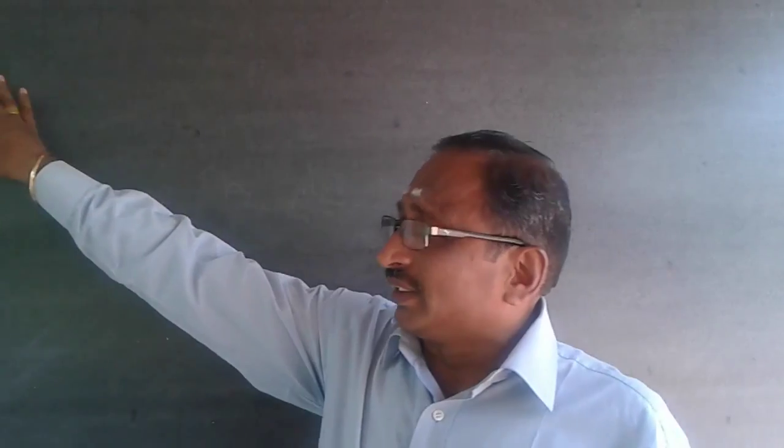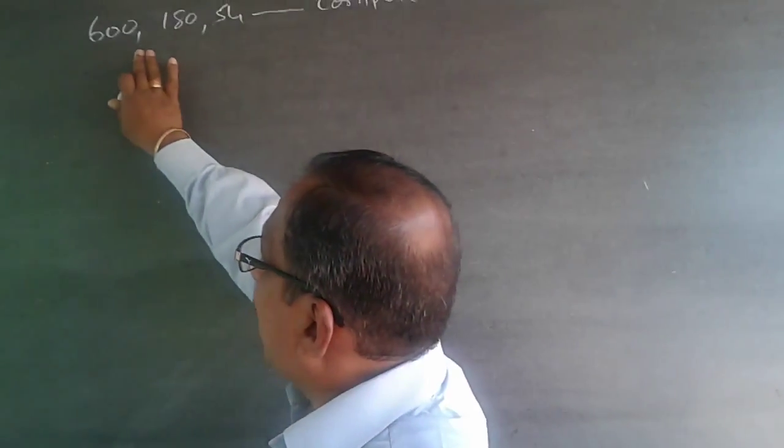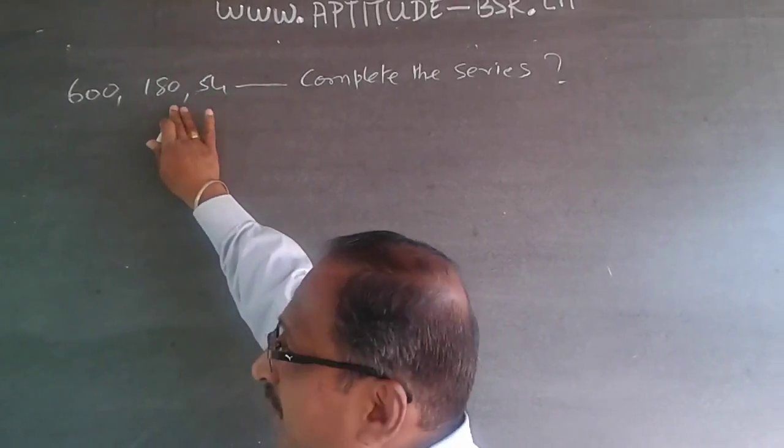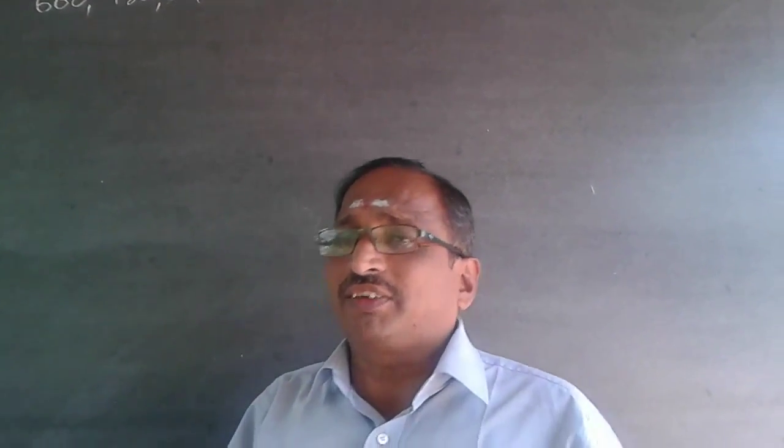Whenever you get a number like this, you'll have to see what is exactly happening between this and this, then whether the same pattern is happening here and here. You require at least two sample sizes to justify that the same thing is happening.